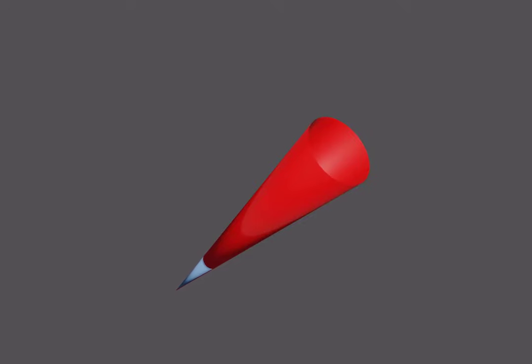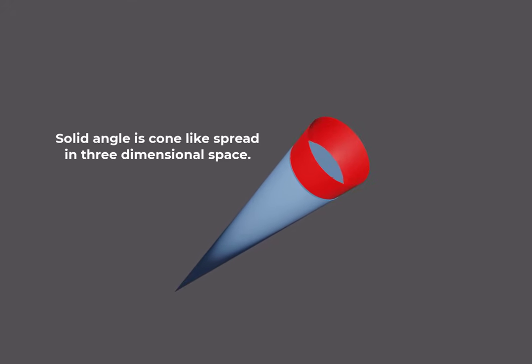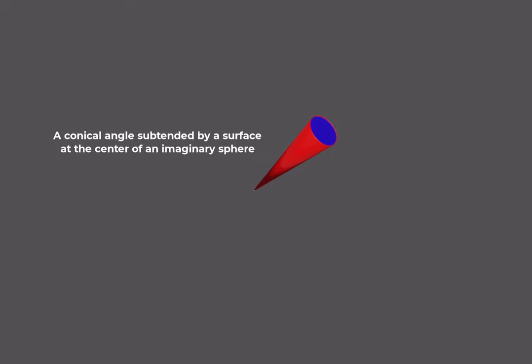Solid angle is a dimensionless quantity that describes the extent of a cone-like spread in three-dimensional space. It can be defined as a conical angle subtended by a surface at the center of an imaginary sphere.